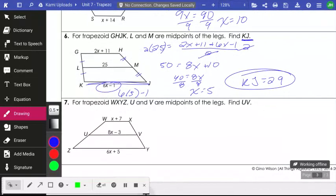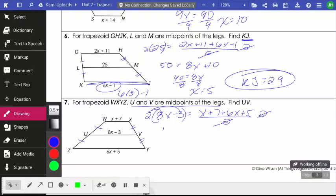Last one. We know that U is the midpoint of this leg and V is the midpoint of this leg. That's this description here, meaning that UV is a midsegment. So since it's a midsegment, I will say the midsegment is equal to the average of my bases. So I'm adding 2 segments. I'm going to divide by 2. I will, to get rid of the divide by 2, multiply both sides by 2. And I will carefully have to distribute this. So I have 16X minus 6 is equal to. Let's go ahead and combine our like terms. I will have 7X plus 12. I need to be able to get X by itself.